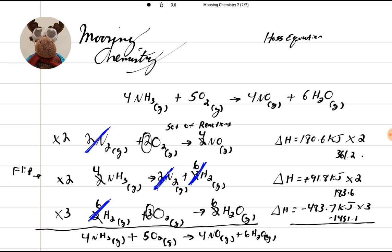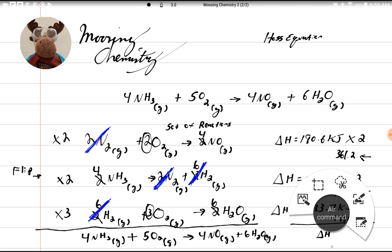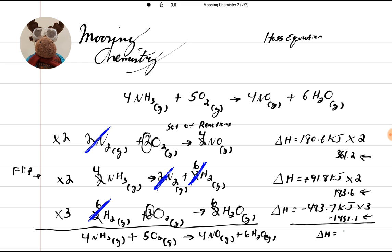Now, all we have to do is add this number to this number to this number. So let's add them all up. So we add 183.6 to the last number plus 361.2 equals. And our delta H value is going to equal negative 906.3 kilojoules.